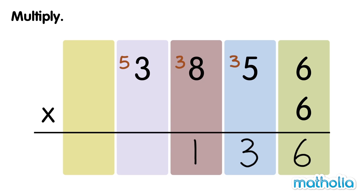Finally, multiply the 1000s. 6 times 3,000 equals 18,000. 18,000 plus 5,000 equals 23,000. 3,856 times 6 equals 23,136.